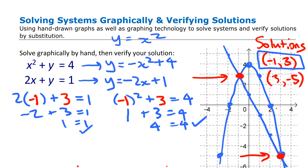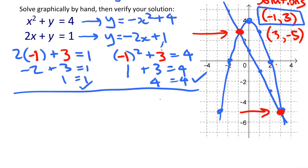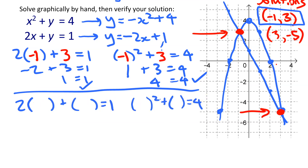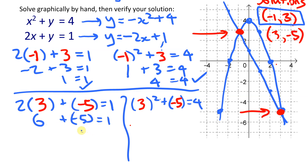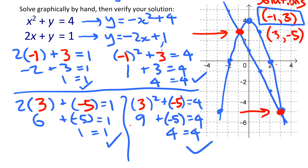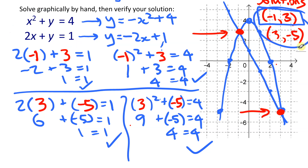Now we check the second solution (3, -5) in both equations. In the linear equation: -2(3) + 1 = -6 + 1... substituting gives -6 + (-5)? Actually: 6 + (-5) = 1 ✓. In the quadratic: -(3)² + 4 = -9 + 4 = ... we get -9 + (-5) check: 9 + (-5) = 4 ✓. You want to check both solutions in both equations.